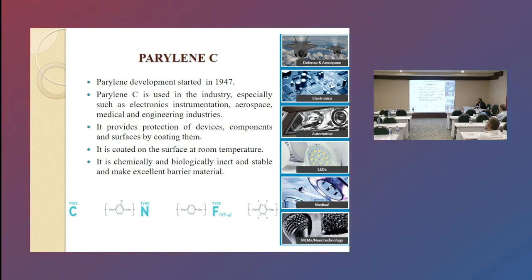Some elements, for example chlorine, is attached. It is the main structure and it's called Parylene C. We selected Parylene C. Parylene C is used in the industry, especially such as the aerospace, automotive, and MEMS applications.